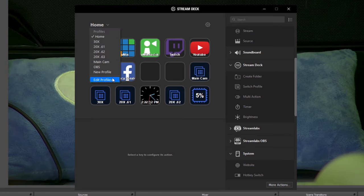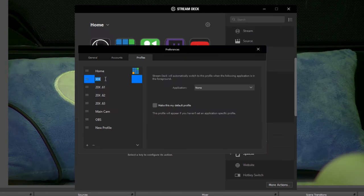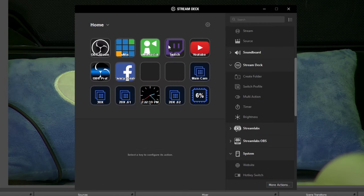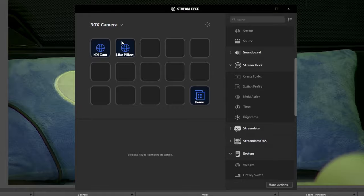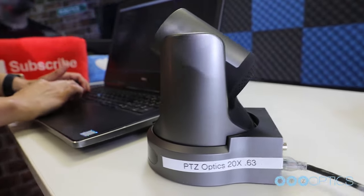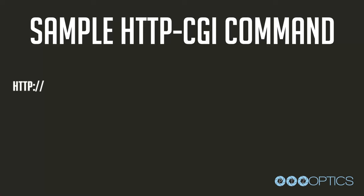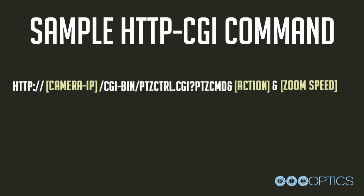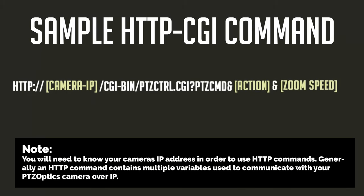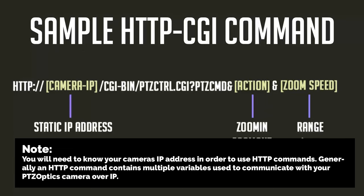In your newly created profile for the camera, choose the Website option which is located under the Systems tab. Here, you can name your preset and enter the HTTP command from the list available at the PTZOptics documentation on PTZOptics.com/downloads. You should be looking for the HTTP command list. Note, you will need to know your PTZOptics camera IP address in order to use the HTTP commands.